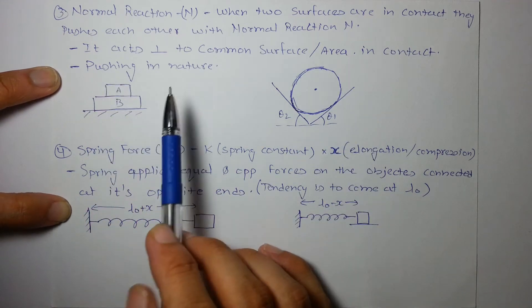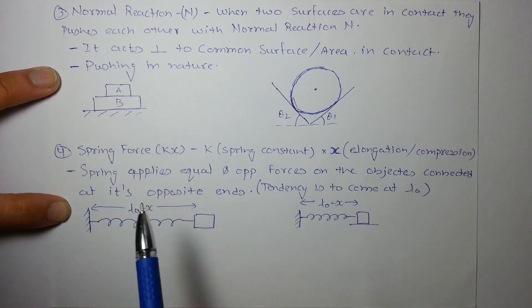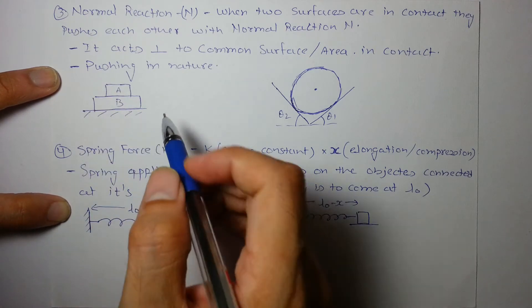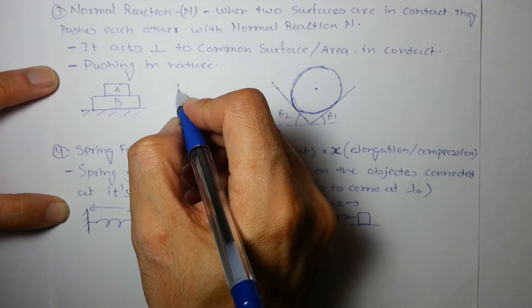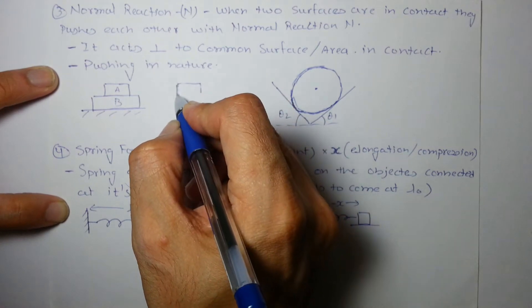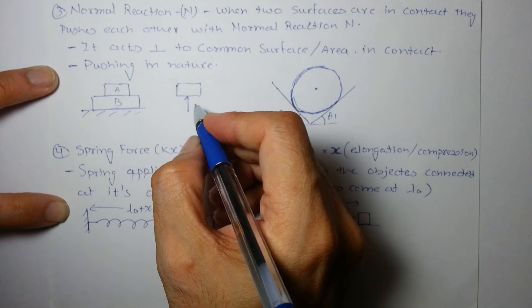Let's say A and B are two blocks placed on a horizontal surface. So what A is experiencing is a pushing force from B.